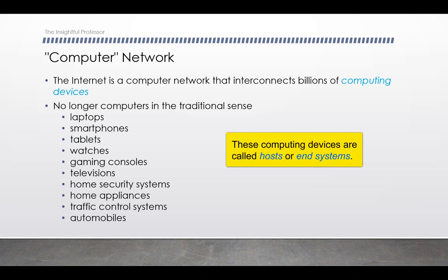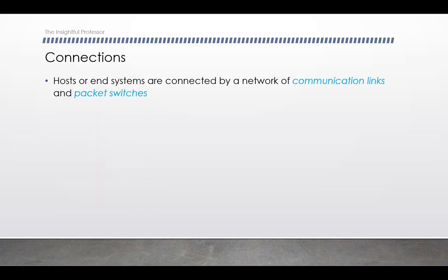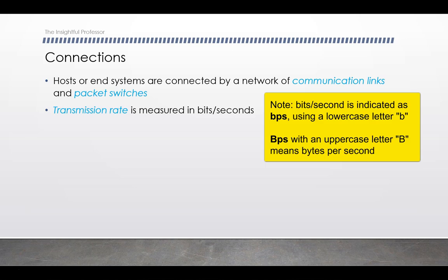These devices are referred to as hosts or end systems. They're called hosts because they are hosting some application, and end systems because of their position within the internet — they're on the fringe, like leaves on a tree. The internet is actually a network of interconnected networks. Hosts or end systems are connected by a network of communication links and packet switches. Communication links are comprised of different types of physical media, like coaxial cable, optical fiber, and radio spectrum. These links can transmit data at different rates, measured in bits per second.